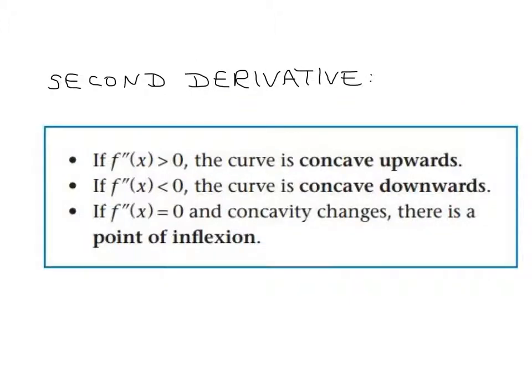The second derivative informs us of the concavity. If the second derivative is larger than zero, it's concave up or a minimum. Less than zero, it's concave down or a maximum.